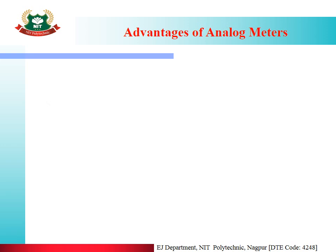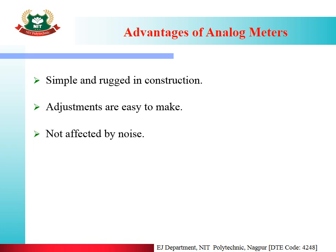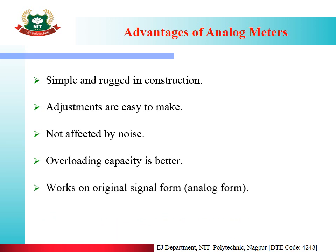Advantages of analog meters: The first advantage is they are simple and rugged in construction. Adjustments are easy to make. They are not affected by noise — if noise is added, there is no effect. Overloading capacity is better, meaning they can handle a little overload. They work on the original signal form, i.e., analog form.